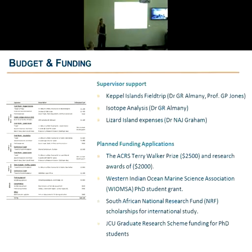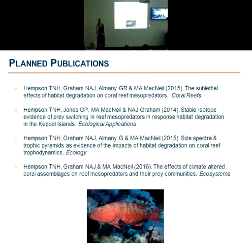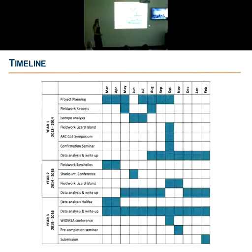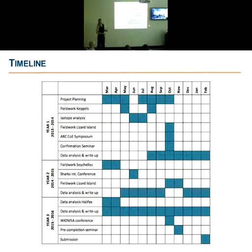I plan to publish at least four publications from this thesis, one relating to each of my research chapters, targeting appropriate journals in the field. My proposed timeline shows that in the first year, a large amount of time has been spent in project planning, three field trips, and substantial time in the laboratory preparing samples for stable isotope analysis, which is now complete. I'm currently at the end of my confirmation planning process, and the remainder of the year will be spent in data analysis and write-up. In year two, I plan to complete all remaining field work, and in year three the focus will be on writing up and data analysis. If all goes to plan, submission is planned for February 2016.